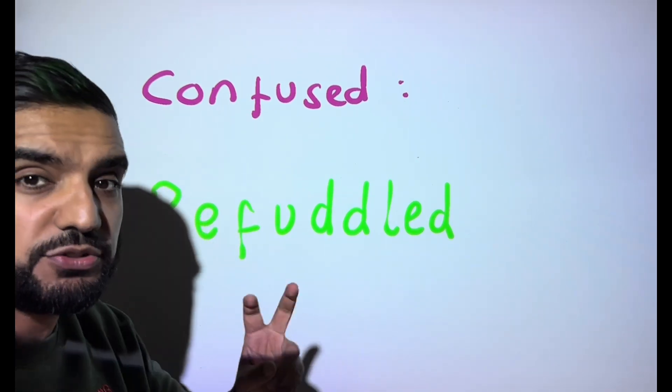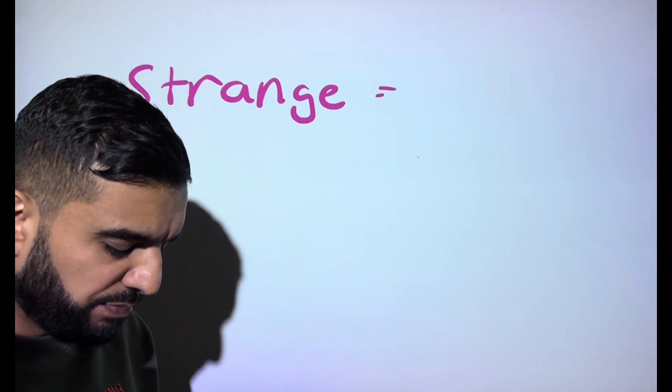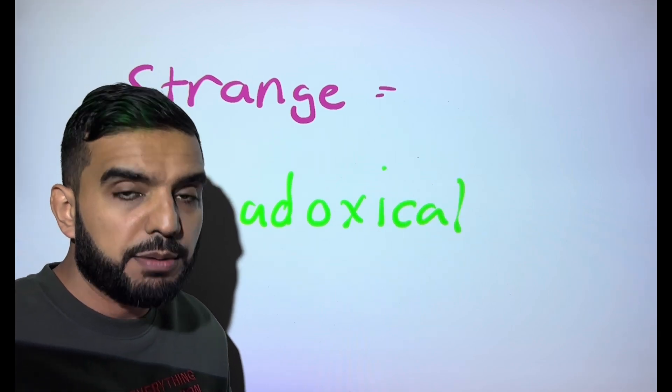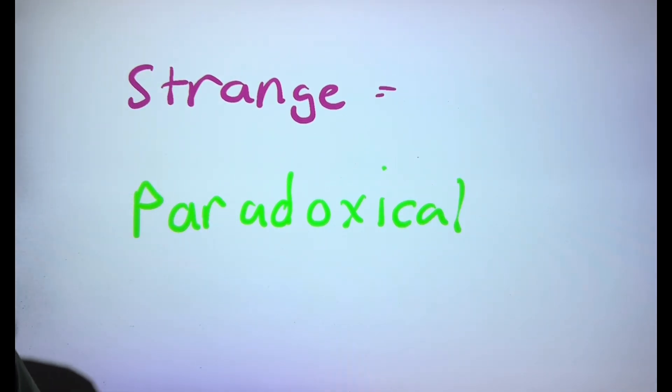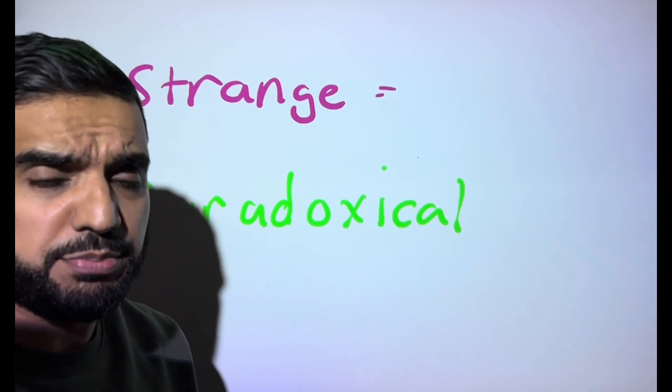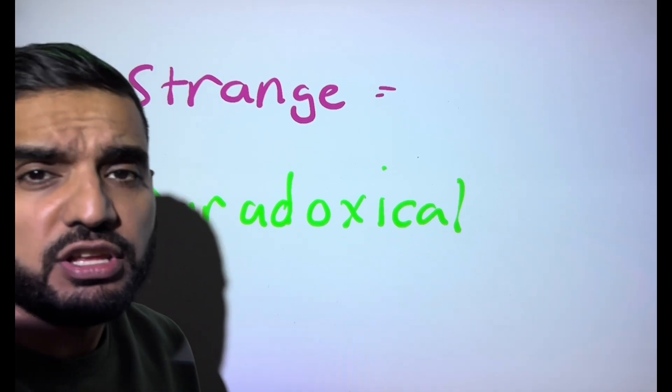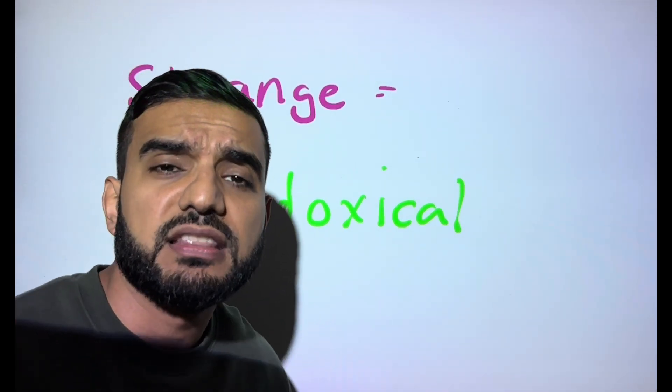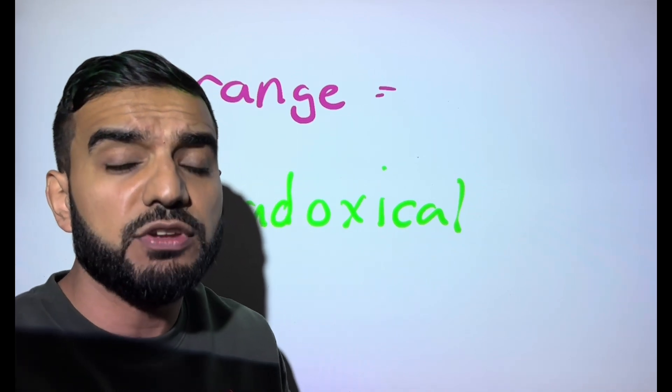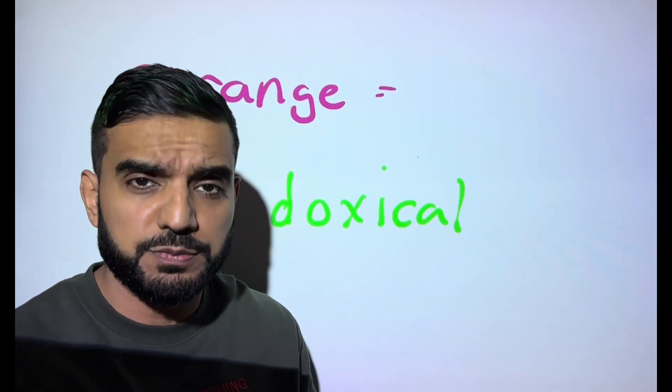Then we have the word strange, and I want you to replace this with a bit of a strange word in itself, and that is the word paradoxical. Paradoxical is when things are happening in the opposite of how you expect them to happen. So if I said that John's behavior was extremely strange, he was doing things that he doesn't normally do, full stop, you might change it to John's behavior was paradoxical. He was doing things that he doesn't normally do.